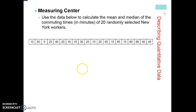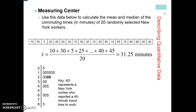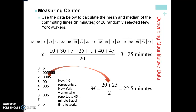We're going to use the data below to calculate the mean and median of commuting time in minutes of 20 randomly selected New York workers. Think about your notation — is this a population or a sample? The mean is shown here. This is the ordered data, which allows us to calculate the median using the stem and leaf plot — notice the key. Since there are an even number, 20 randomly selected, we're going to have nine above and nine below, with the two in the middle being 20 and 25. To get the median, add them together and divide by two.